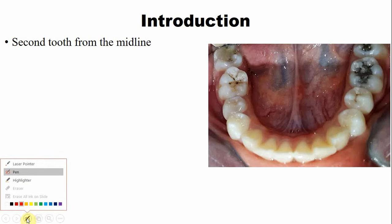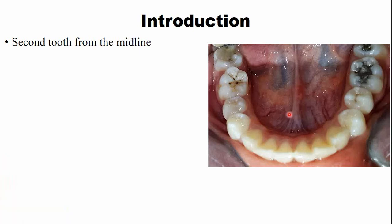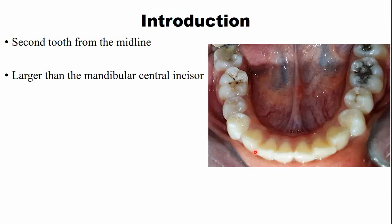This clinical picture shows the mandibular incisors with the midline visible. The central incisors are the first teeth, and the lateral incisor is the second tooth from the midline. On the mesial side, the lateral incisor contacts the central incisor, and on the distal side it contacts the canine. Notably, the mandibular lateral incisors are larger than the mandibular central incisors — the reverse of the maxillary arch, where the lateral is smaller than the central incisor.